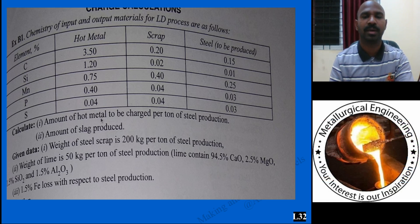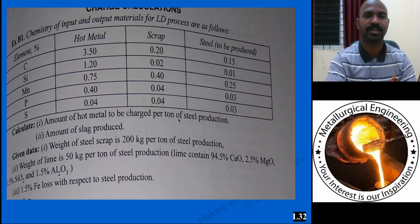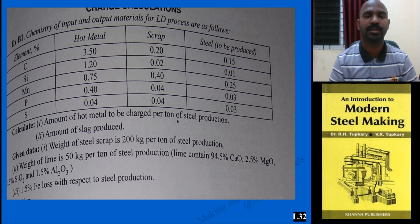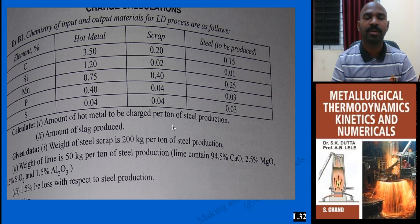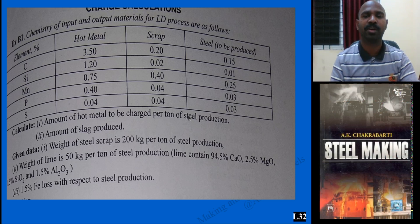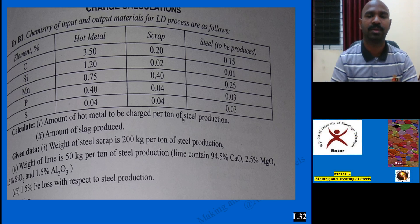The first question is: what is the amount of hot metal to be charged to produce 1 ton of steel? All numerical problems are with respect to 1 ton of steel production. One must remember that 1 ton equals 1000 kg of steel. If this is not given, you need to assume it and write 'assume' in your solution.